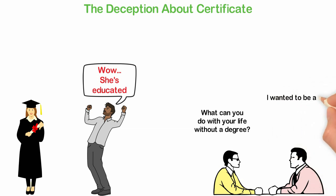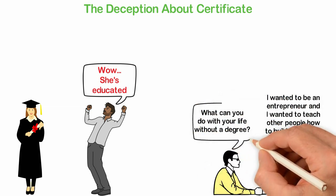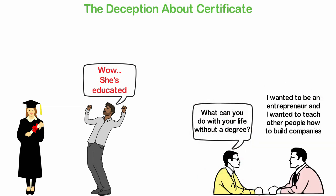I told him that I wanted to be an entrepreneur and I wanted to teach other people how to build companies. He believed that I couldn't succeed without a degree and he seriously warned me against what I was trying to do.